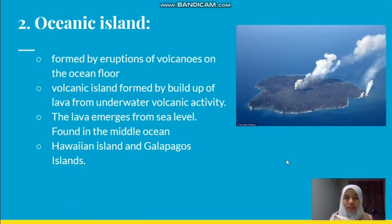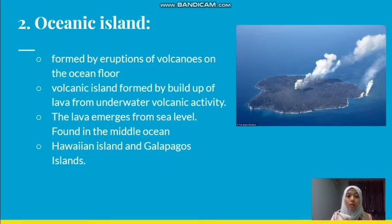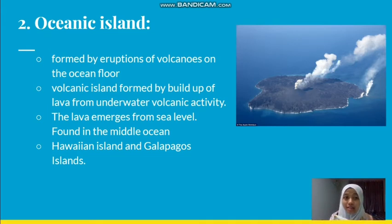Number two: oceanic island. You can find this island in the middle of the ocean. It is formed by an eruption of a volcano on the ocean floor. The volcano is formed by a build-up of lava from underwater volcanic activity, and the lava will emerge above sea level — then it will create an oceanic island.